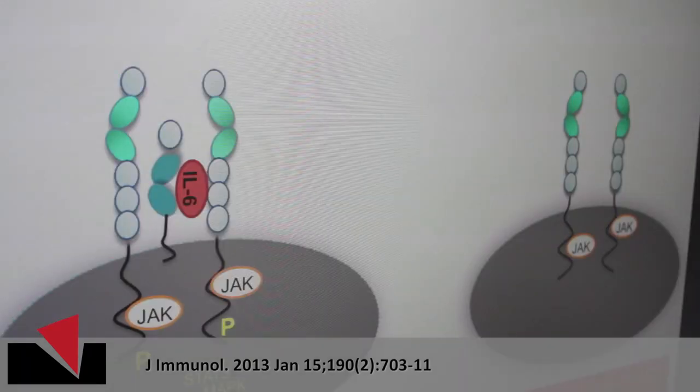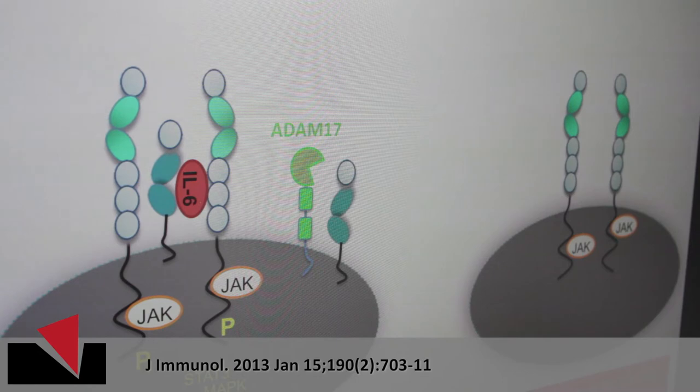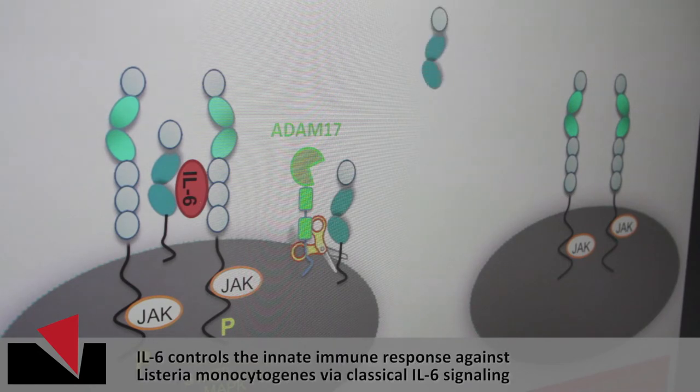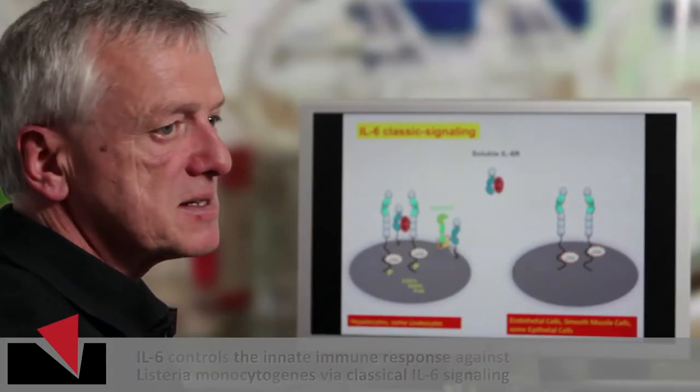What we found a couple of years ago is that there's a protease called ADAM17, which cleaves the membrane-bound IL-6 receptor and generates a soluble form of this protein. And this protein can still bind the ligand interleukin-6.